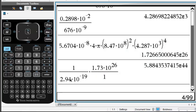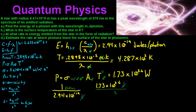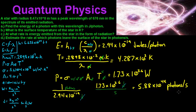So on the calculator: 1 divided by 2.94 times 10 to the negative 19, times 1.73 times 10 to the 26, gives us 5.884 times 10 to the 44th. So you're left with 5.88 times 10 to the 44 photons per second. And that's how you solve that problem.